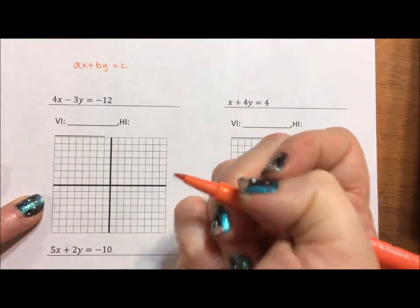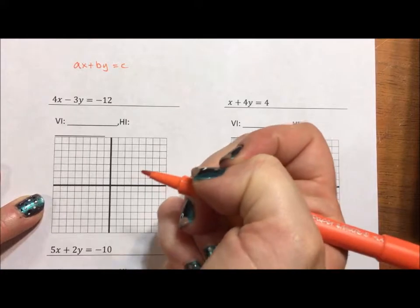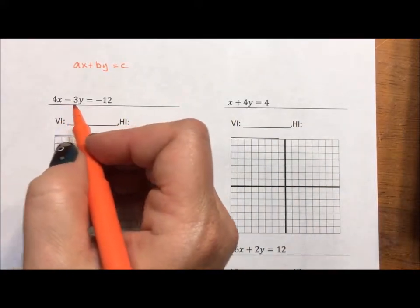And the easiest way to graph is by graphing the intercepts. What I mean by graphing the intercepts is what I'm going to do is I'm going to say, hey, what happens if x is 0?